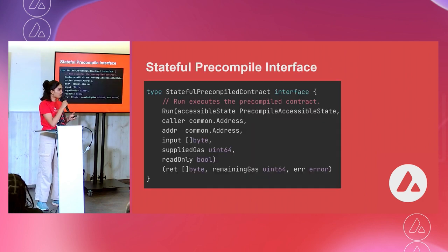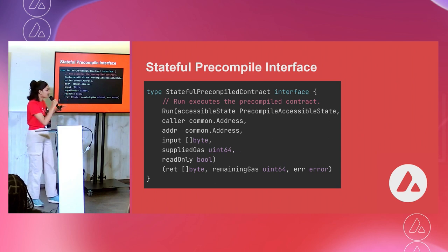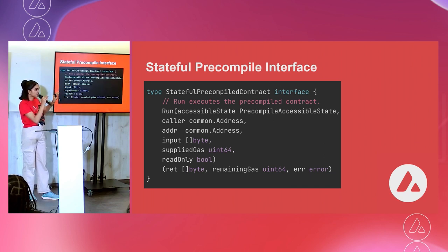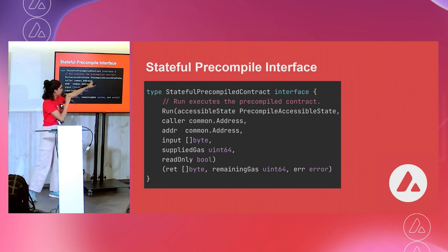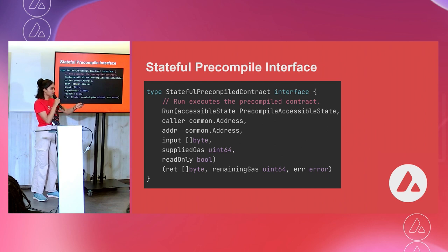Let's go over the stateful precompile interface. Now we only have one function — the run function — which takes in a lot of inputs. The most important one is accessible state. We now take in state as an input, and that allows us to modify the EVM state.